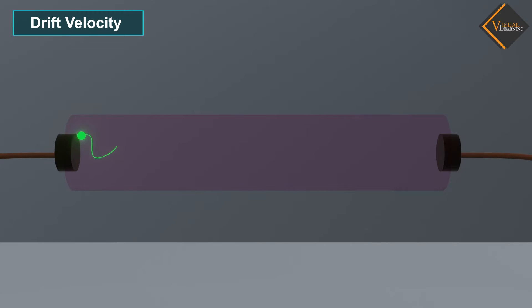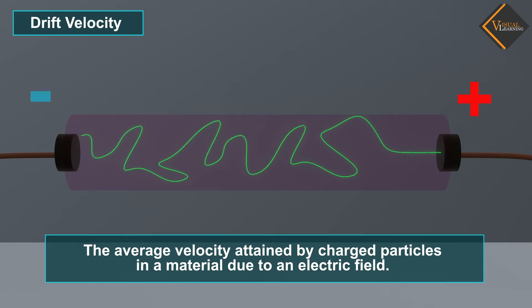Drift velocity refers to the average velocity of electrons when they accelerate from a negative terminal to a positive terminal. We can define drift velocity as the average velocity attained by charged particles in a material due to an electric field.